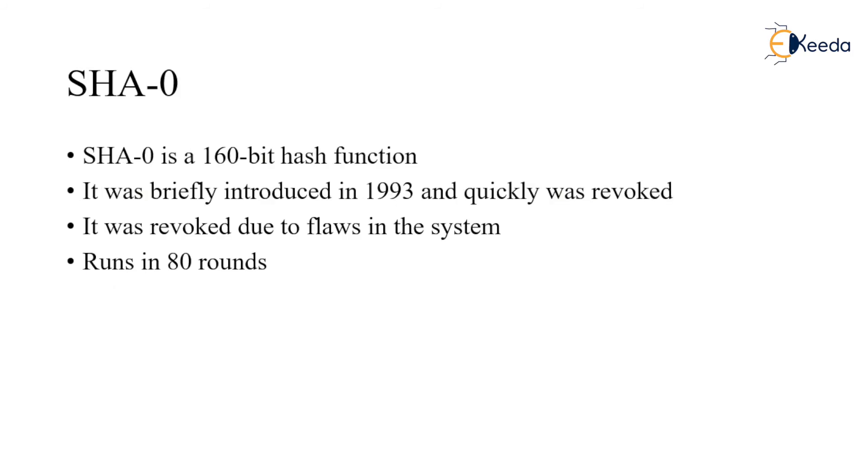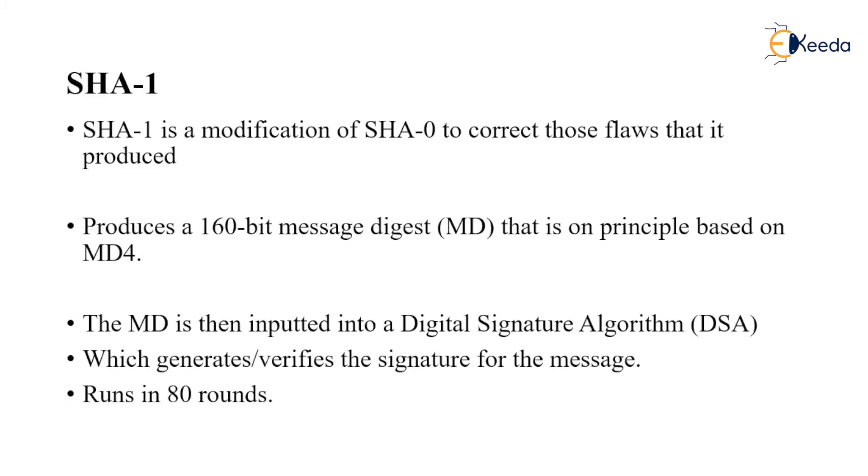SHA-0 is a 160-bit hash function. It was briefly introduced in the year 1993 and quickly was revoked due to flaws in the system. It has 80 number of rounds.